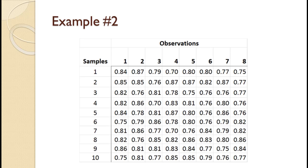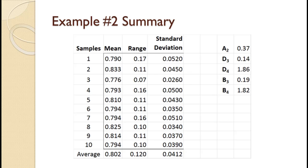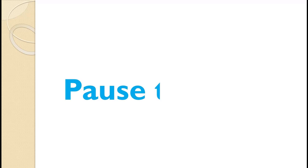The slide shows a second set of data for diameters of holes drilled by an industrial drill press. There are 10 samples and each sample has a size of 8. It is known from previous experience that the standard deviation of the process is 0.043 inch. A summary of the data is shown on the slide — this is all we need to construct the control charts. Also shown are the control chart factors for a sample size of 8. Since you have seen an example already, pause the video and try to work this problem on your own. Once you are done, you can use the video to check your work and spot any mistakes.